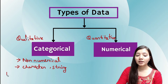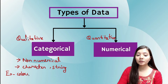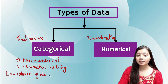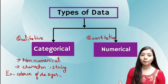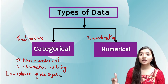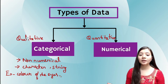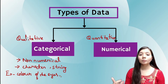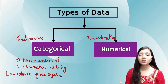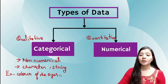For example, color of the eyes. Suppose you have a dataset with a column named 'color of the eyes' and it contains values like green, blue, black, brown. These kinds of values in that column — that will be categorical data.